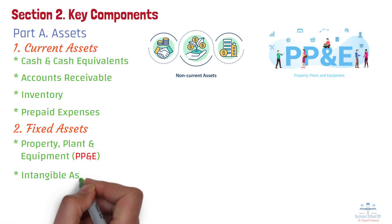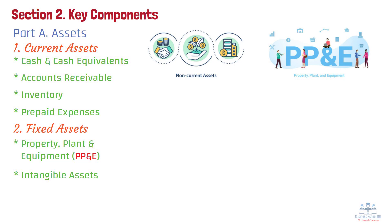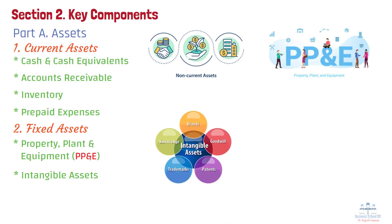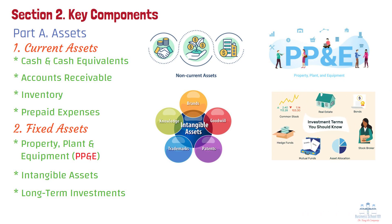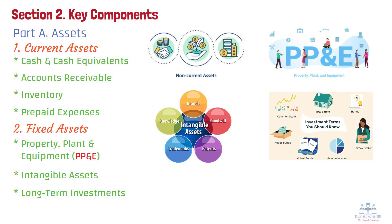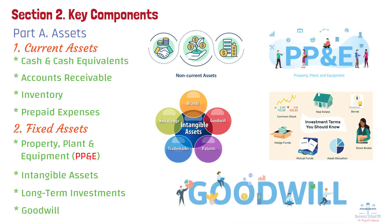Further examples of fixed assets include intangible assets — non-physical assets with long-term value such as patents, trademarks, copyrights, and brand reputation, which contribute to a company's competitive advantage; long-term investments — stocks, bonds, or real estate held by the company that are not meant to be converted into cash quickly; and goodwill — the premium a company pays when acquiring another business, representing factors such as brand reputation, customer loyalty, and intellectual property.